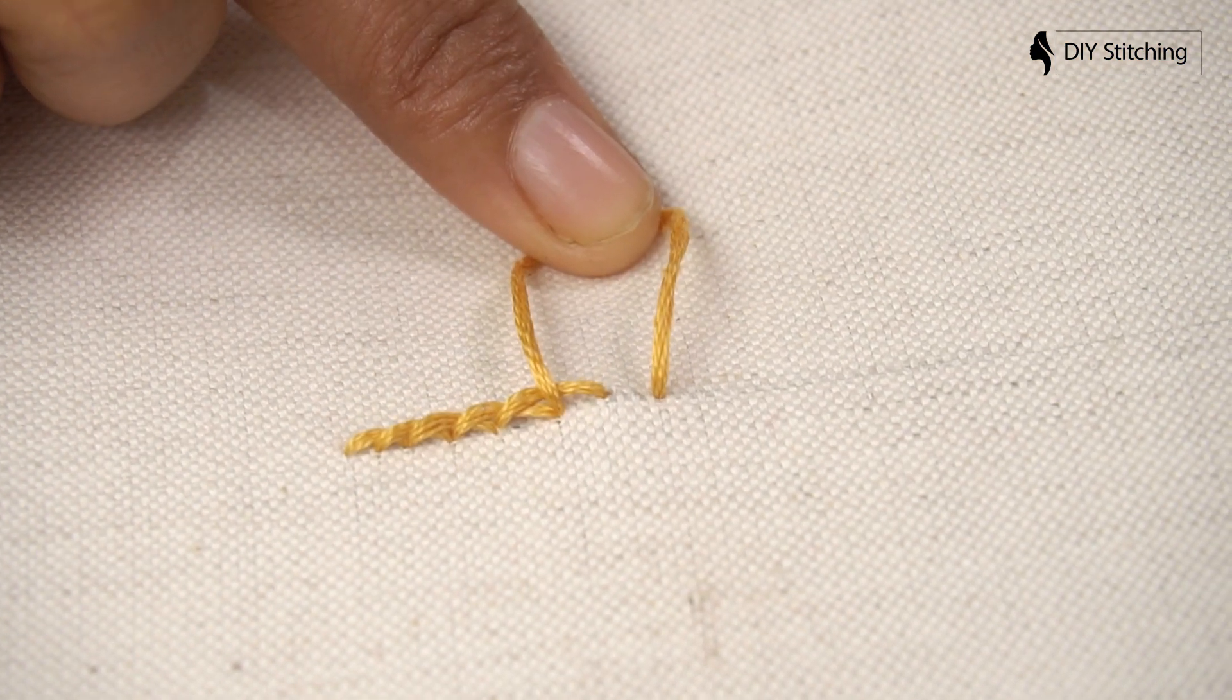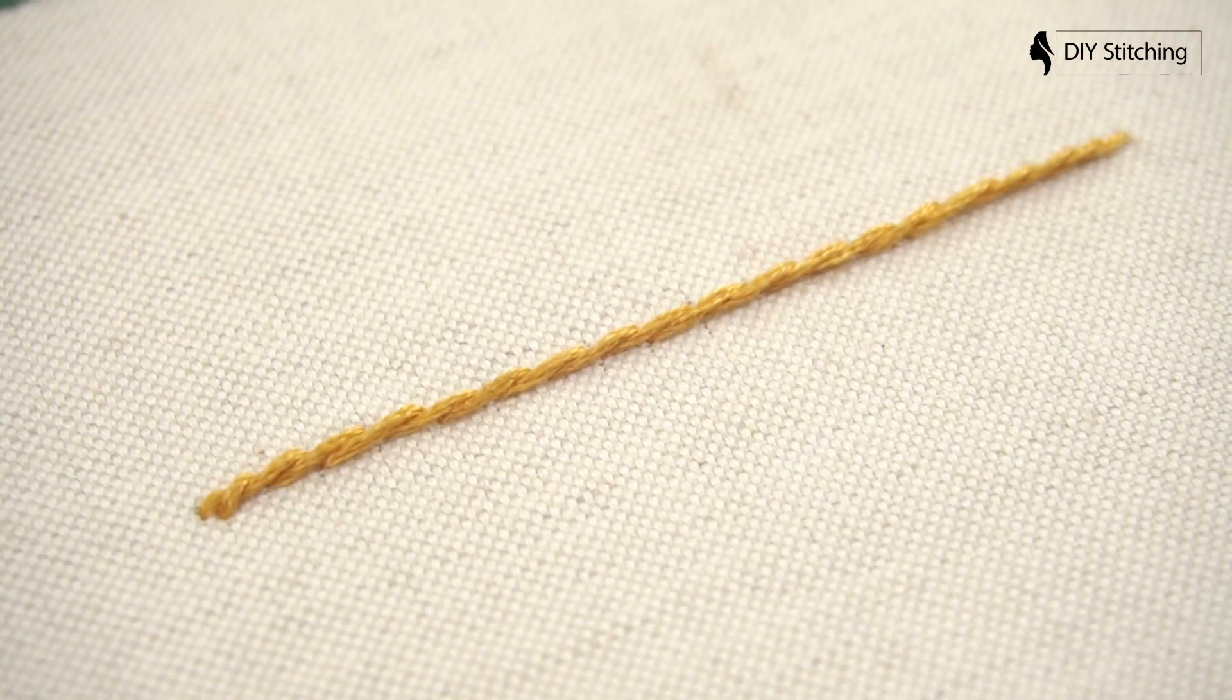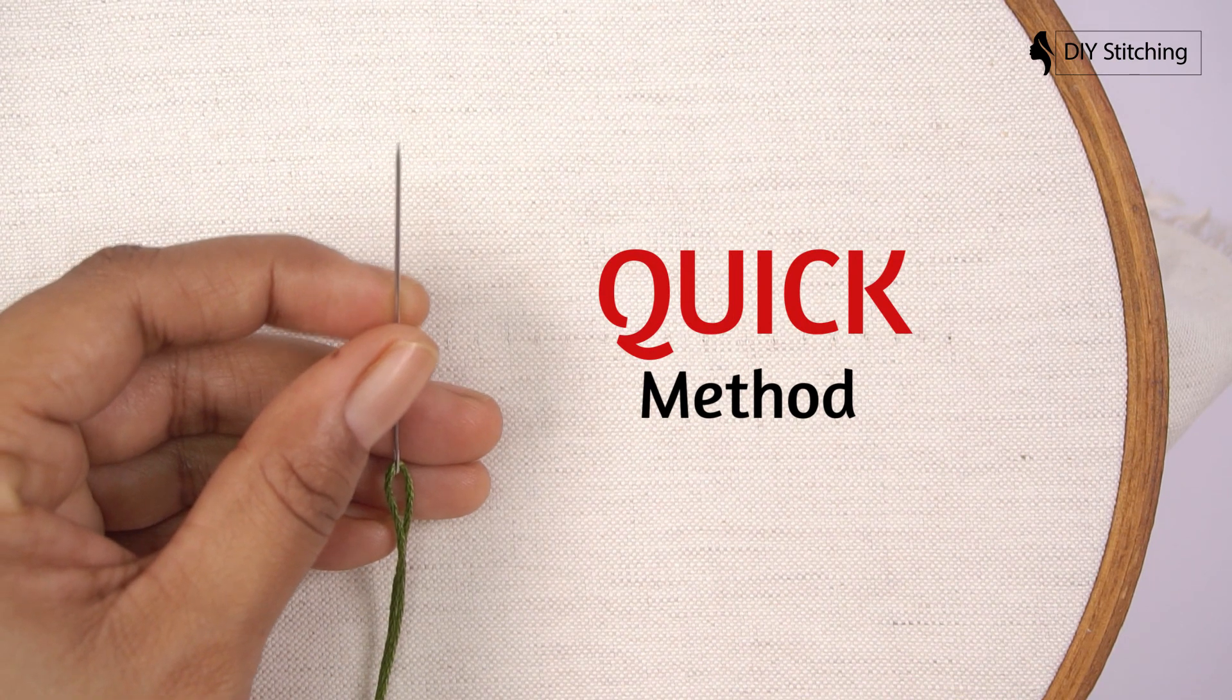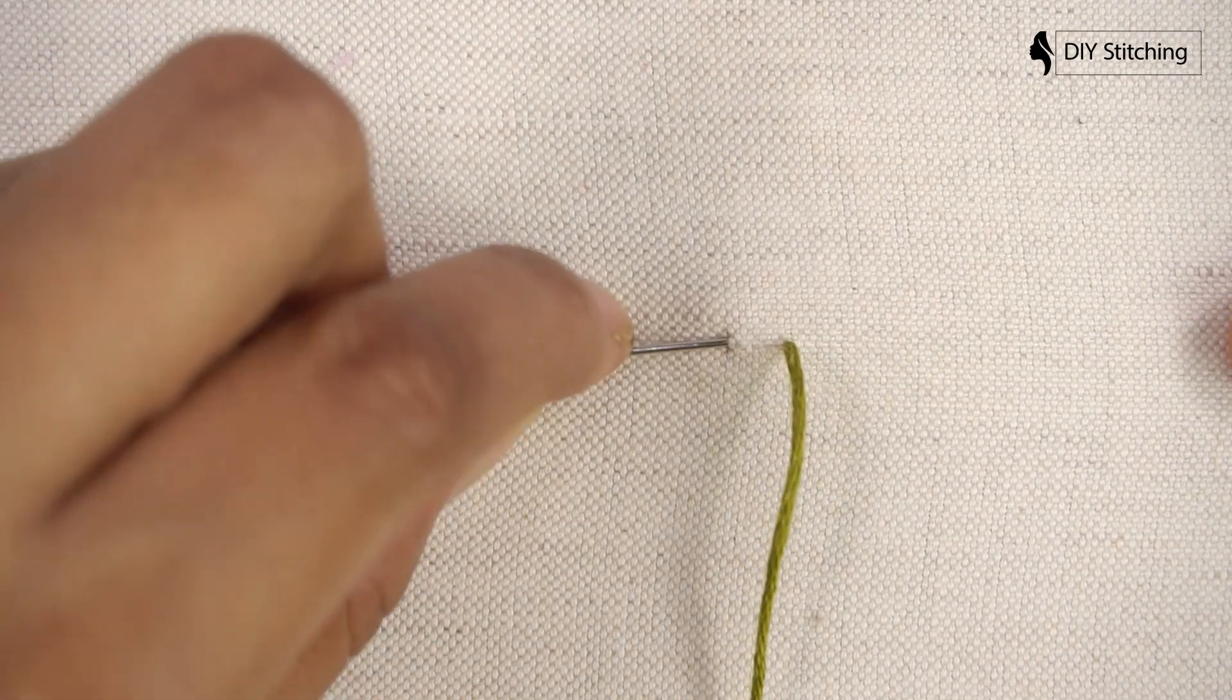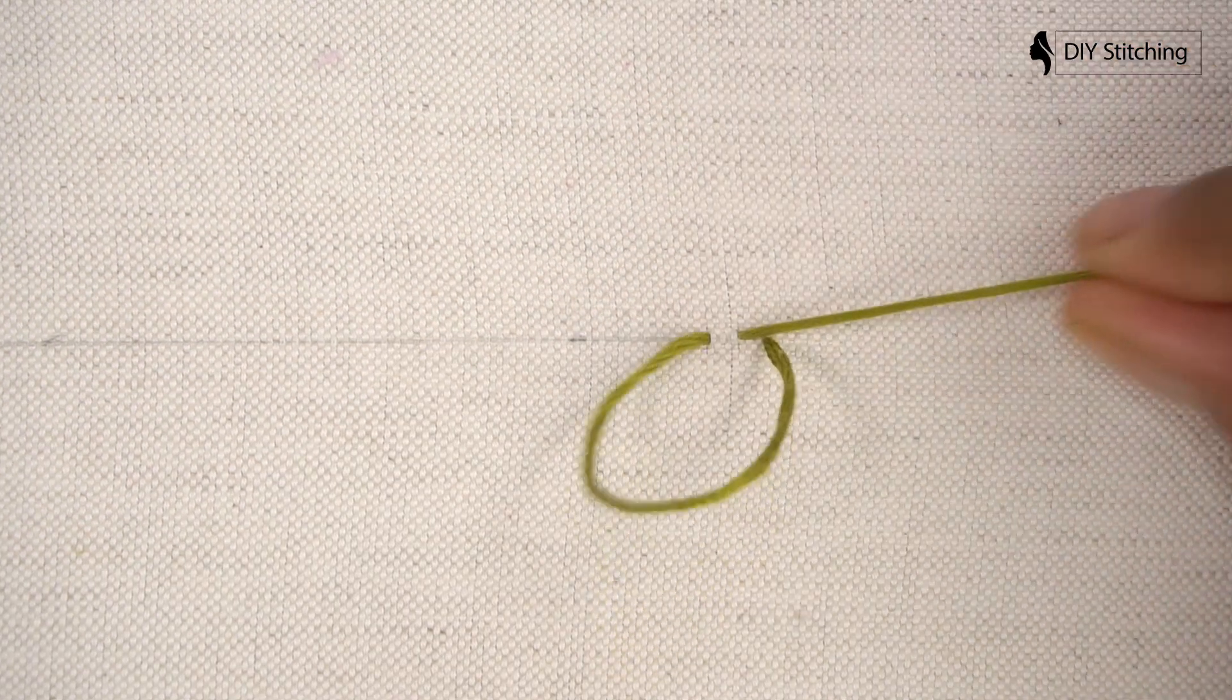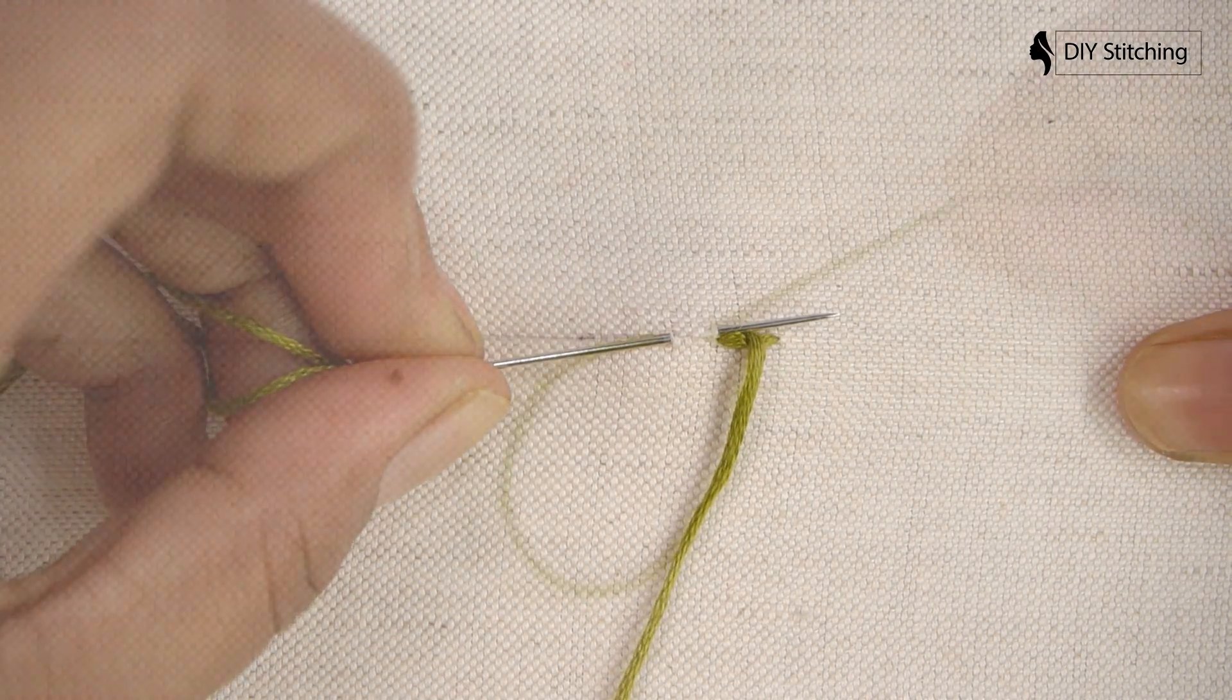As you try the two methods with different stitches, you may find that you enjoy working some with stabbing and others with sewing. You may also find that with one method, it's easier to work right to left, while the other is better working left to right. There are no rules here, so experiment and go with what works.